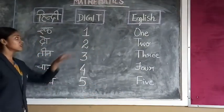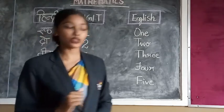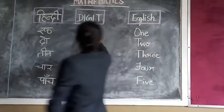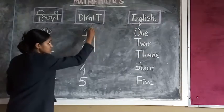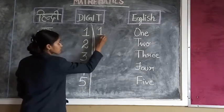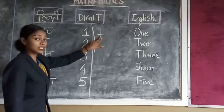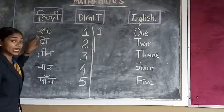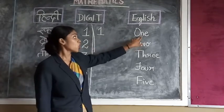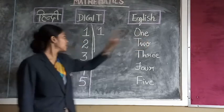The first number, 1. This is how we write 1. I will write it once again for you. If I draw a line here, this is the way to write 1. And what is Hindi name? How to write 1? Ek.